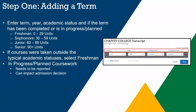Enter term, year, academic status, and completion status. Pay attention to the following suggestions when adding a term: enter course information for the term line by line following the sequence of the transcript copy you are using for reference.